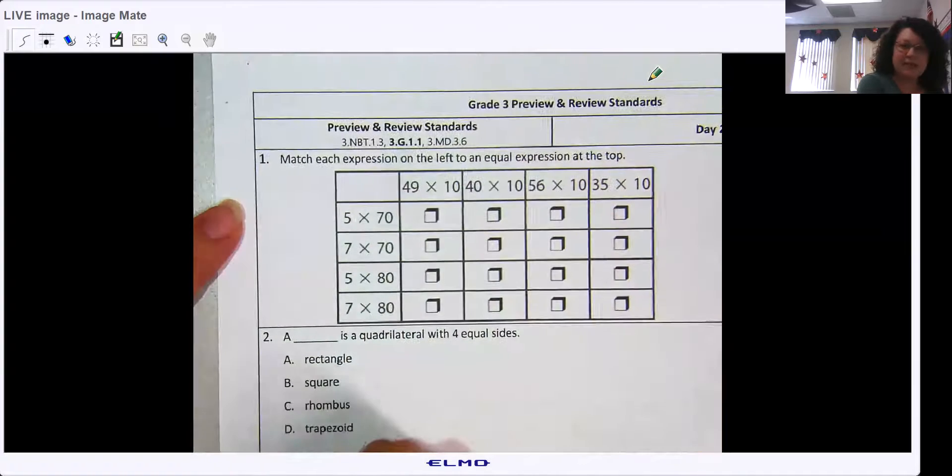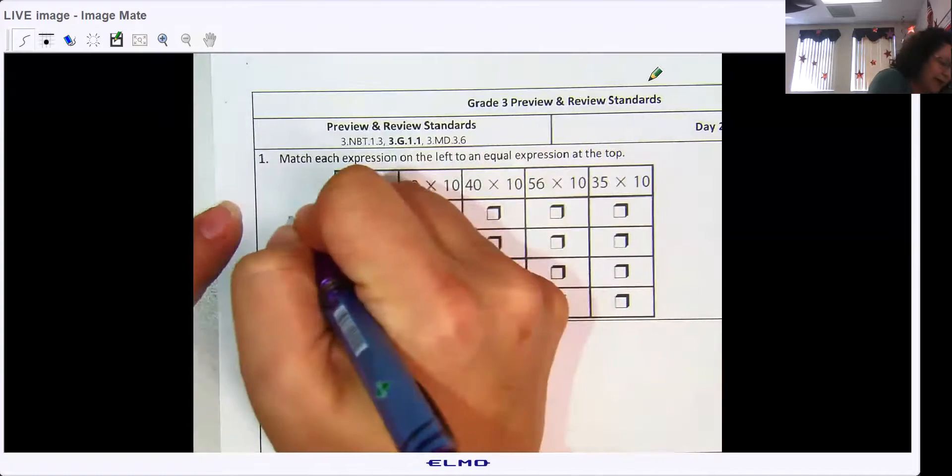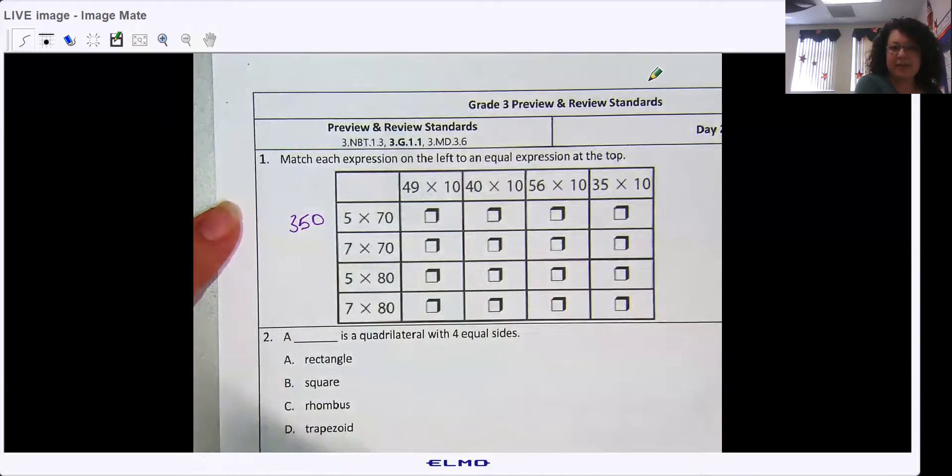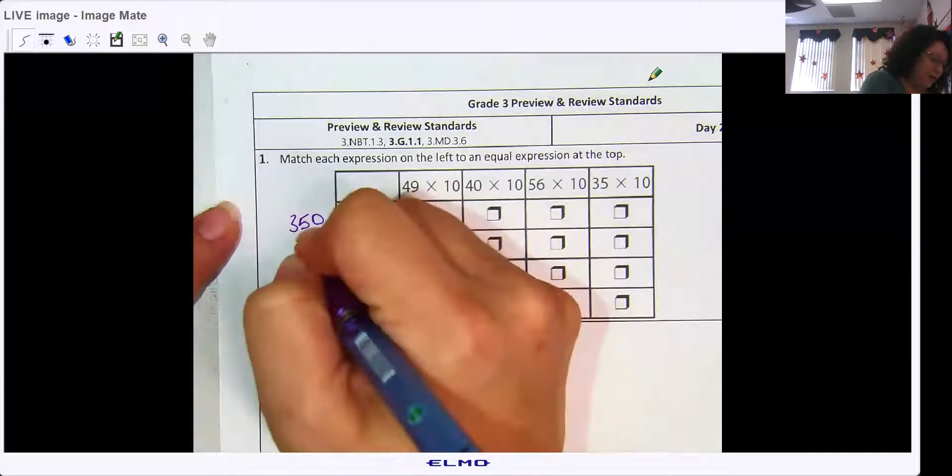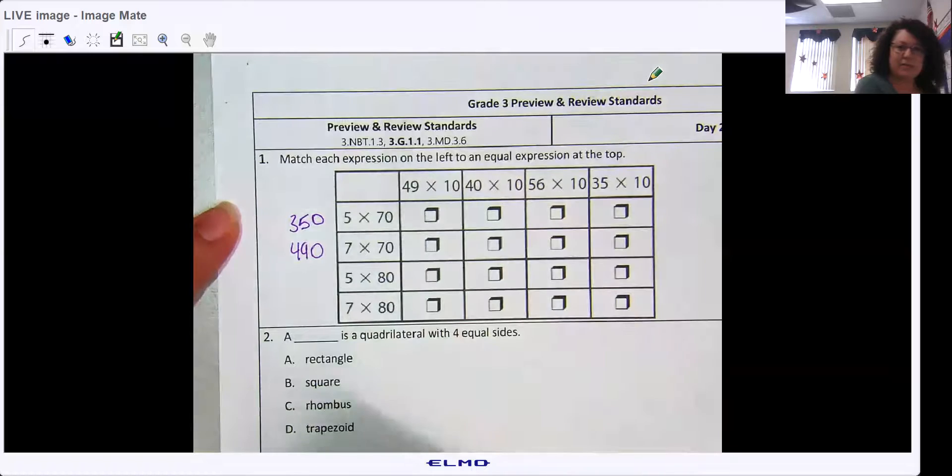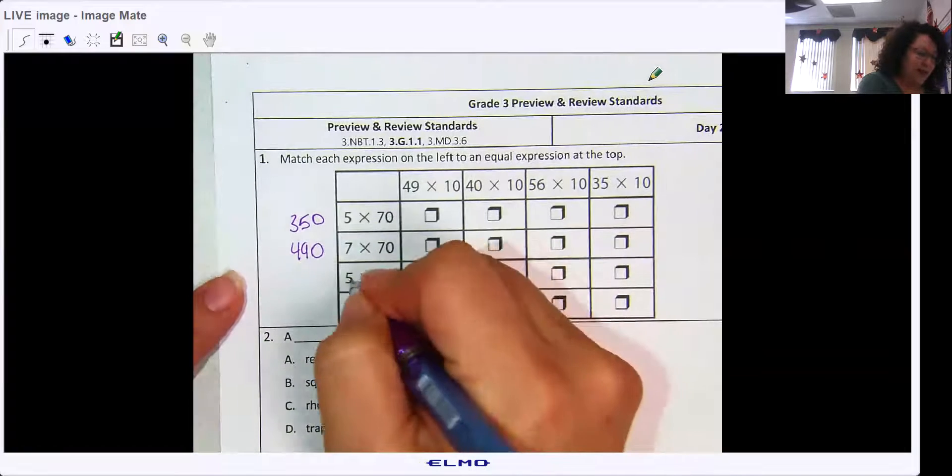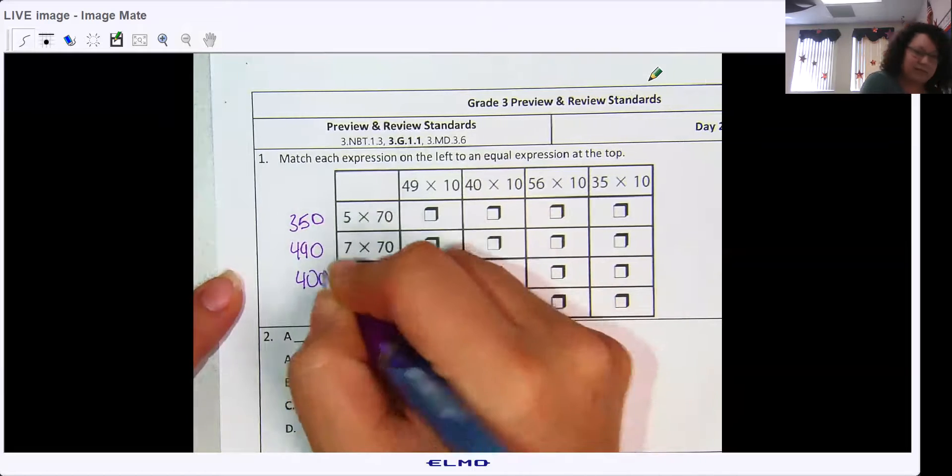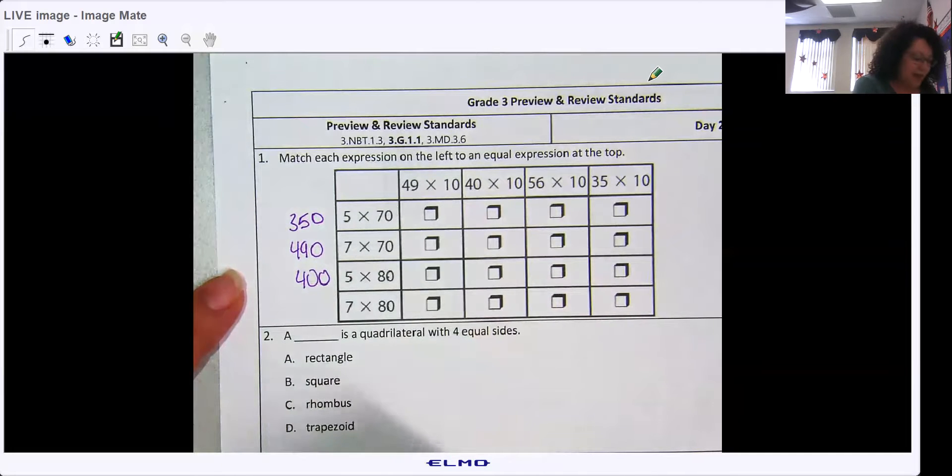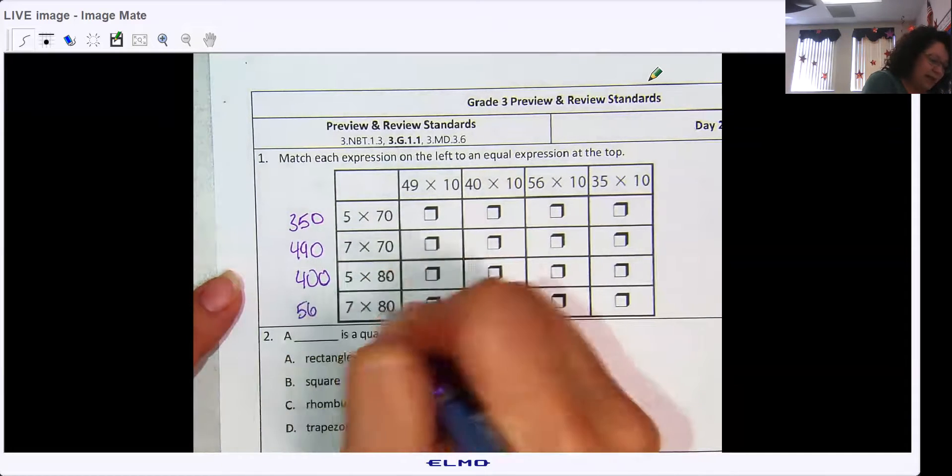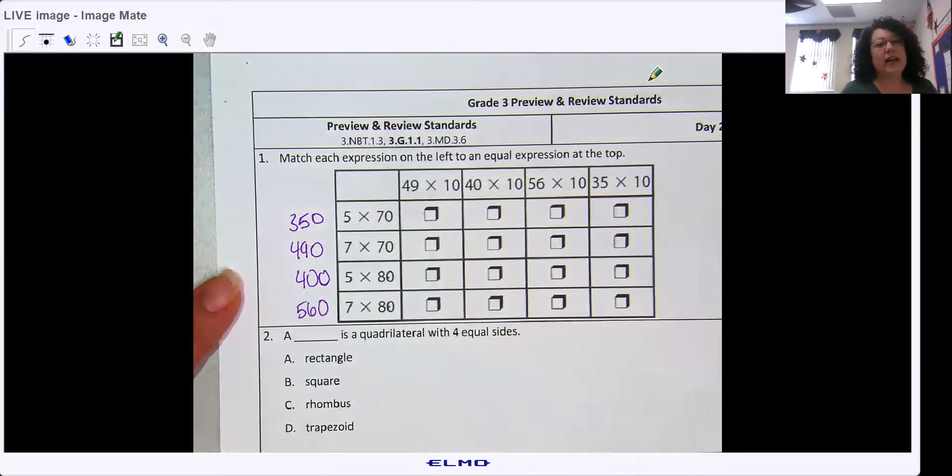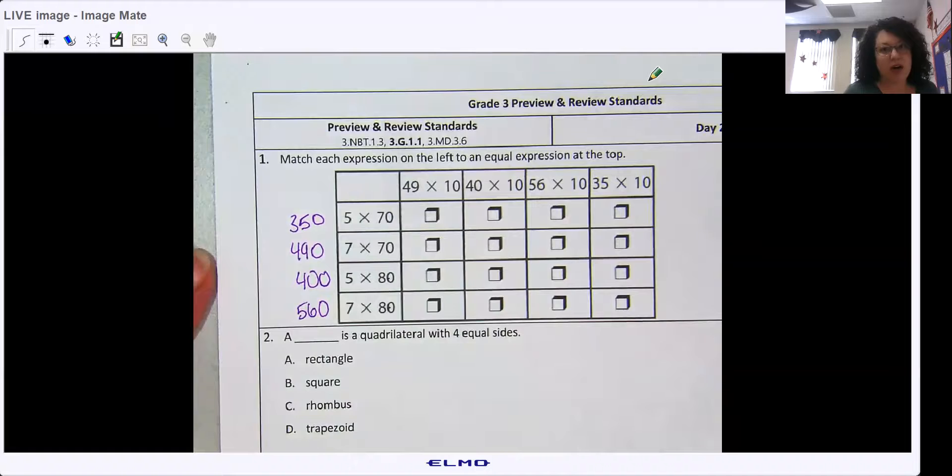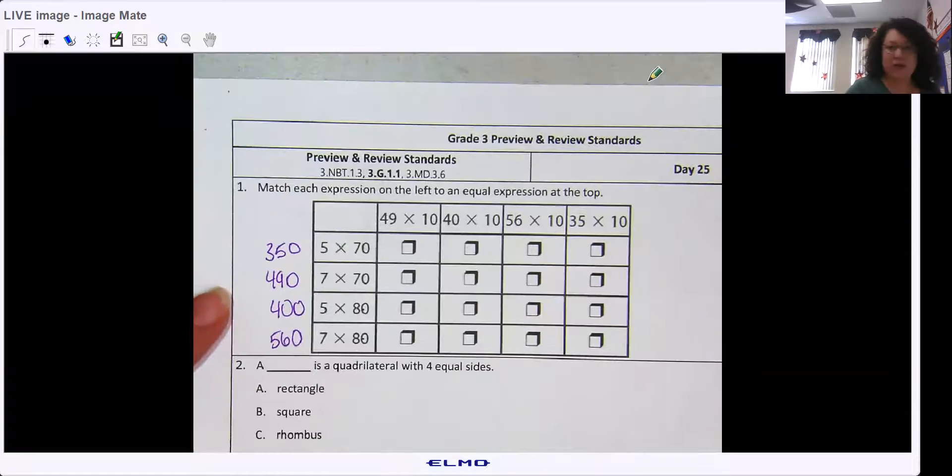So 5 times 7, 35, add my zero. 7 times 7, 49, add my zero. 5 times 8, 40, add my zero. And 7 times 8, 56, add my zero. So if you don't have your facts down by now, you better work on some of those strategies that we have taught you to get those answers.